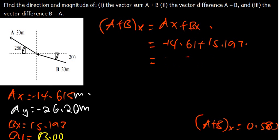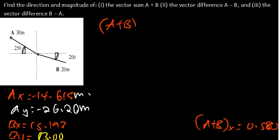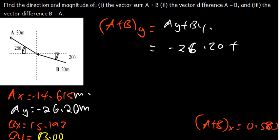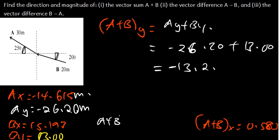Now let's find the Y component of A plus B. It is AY plus BY, which is negative 26.20 plus negative 13.00. This gives us negative 39.2. So the Y component of A plus B is negative 13.2.